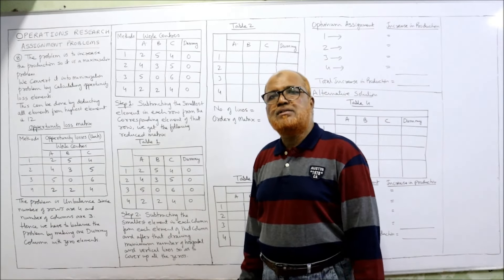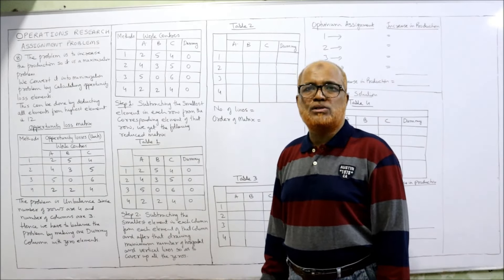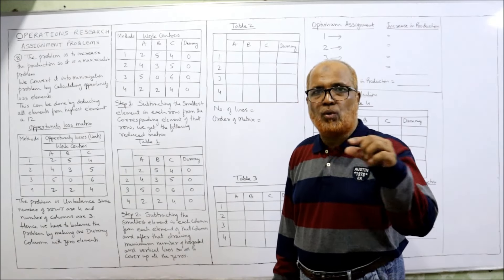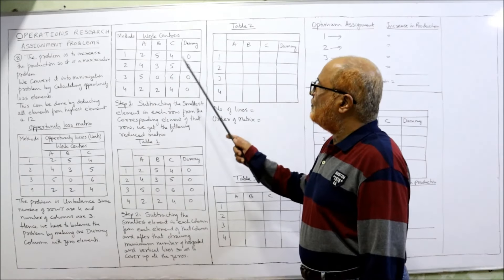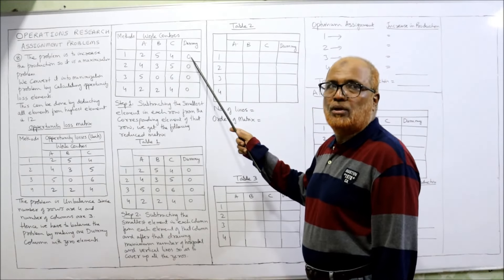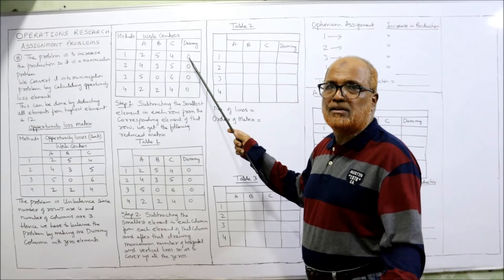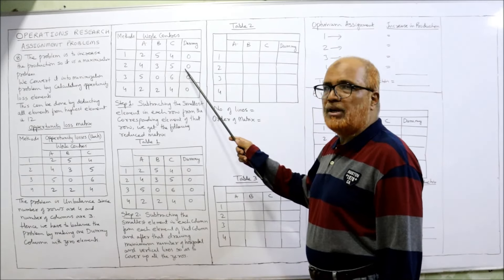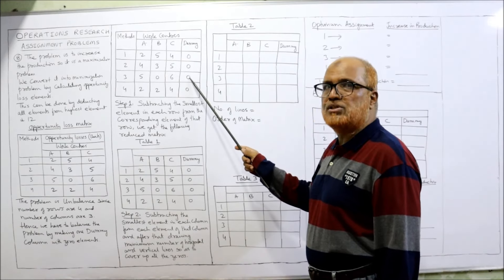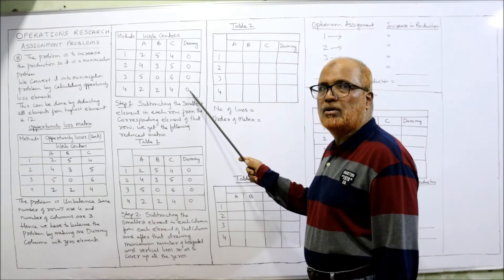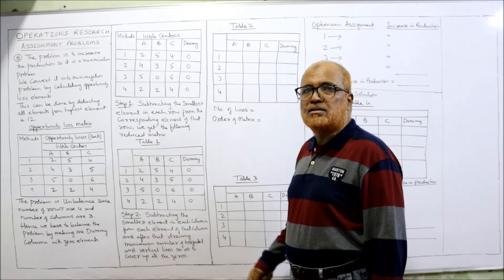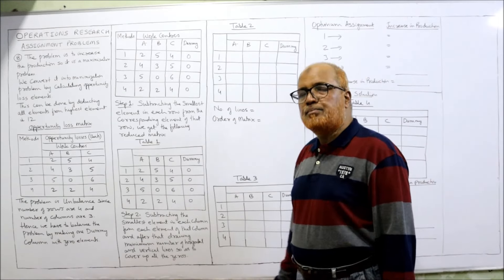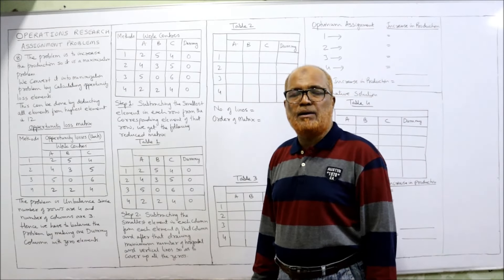Now we can start the usual steps. The first step is row subtraction — subtracting the smallest element in each row from every element of that row. The first row minimum is zero, so subtracting zero gives the same values: 2, 5, 4, 0. The second, third, and fourth rows also have minimum zero, so subtracting zero gives the same values throughout. Row subtraction step is completed.